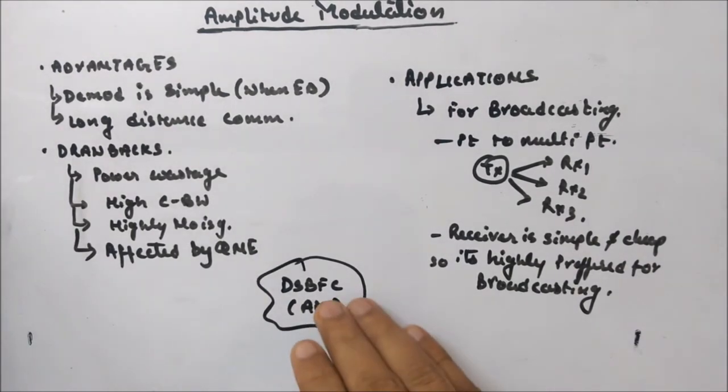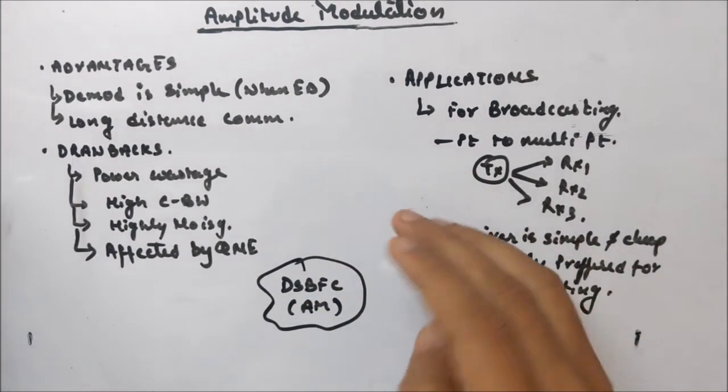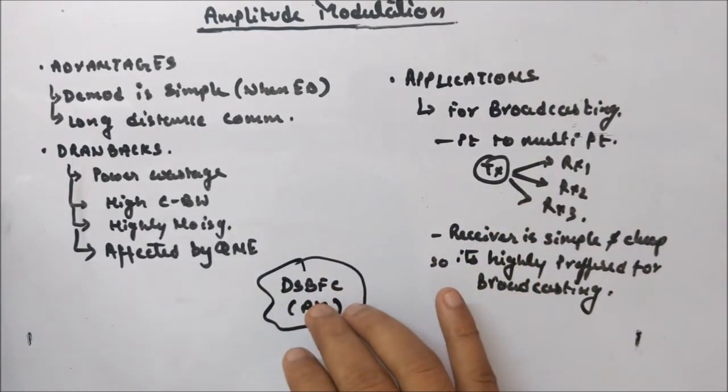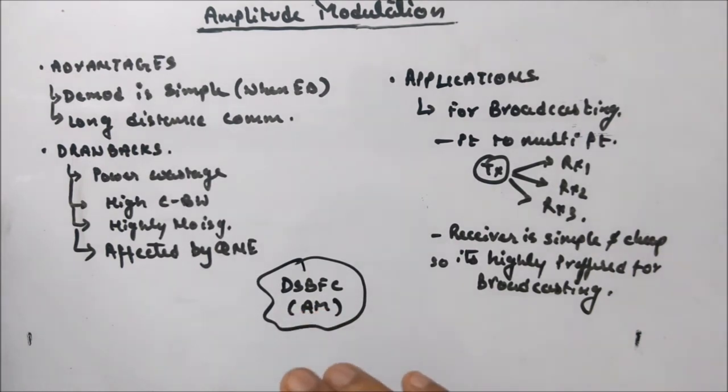Now we're gonna move on to the better version of amplitude modulated wave - double sideband suppressed carrier. And we want to see how it is better than DSBFC.